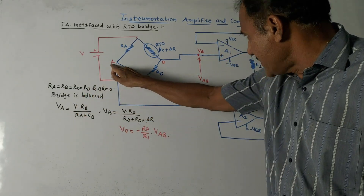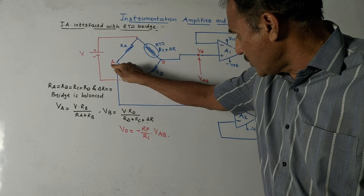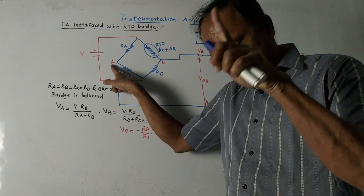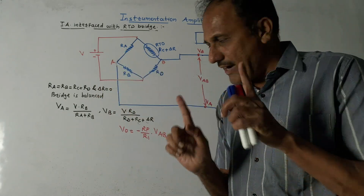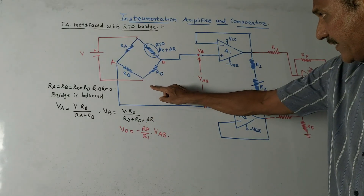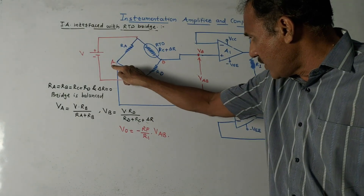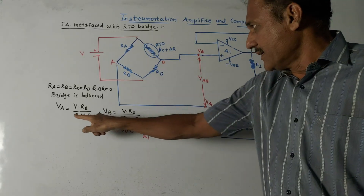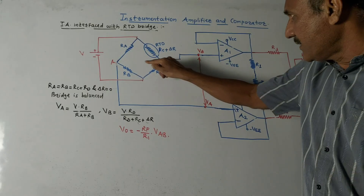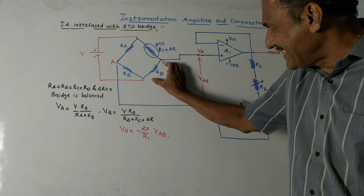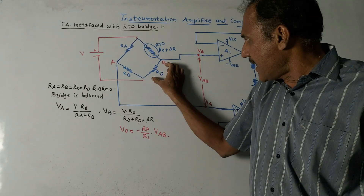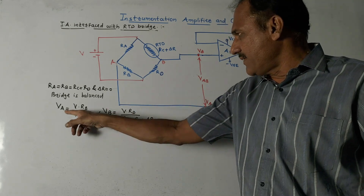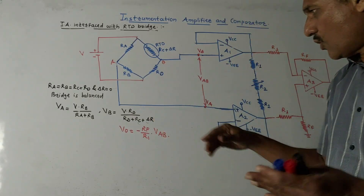Now look at the equations. VA is the voltage at point A. Using the voltage divider formula, VA = V × RB / (RA + RB), where V is the supply voltage. Similarly, VB = V × RD / (RD + RC + ΔR). When the bridge is balanced, VA and VB are equal, so VA − VB = 0.